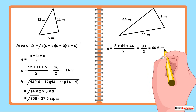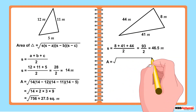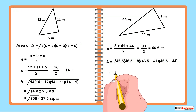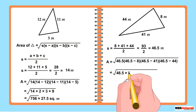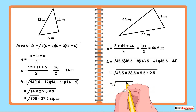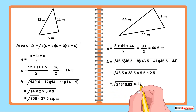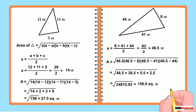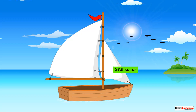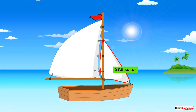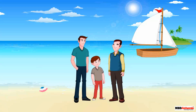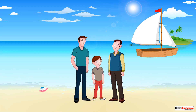The semi-perimeter of the larger sail is 46.5 meters. Sid substitutes the values of s, a, b, and c into the formula and does the calculations, getting a result of 156.9 square meters. Sid says that 27.5 square meters of cloth is required for the smaller sail and 156.9 square meters is required for the larger sail. David praises Sid for finding the area of cloth required for making the sails.